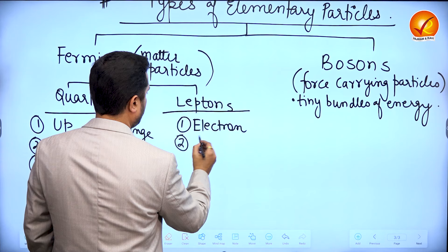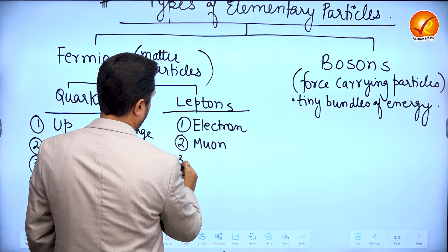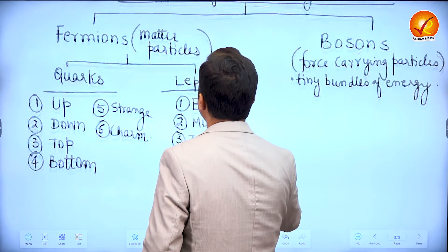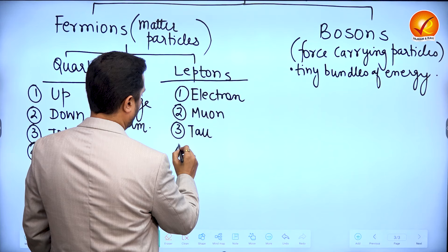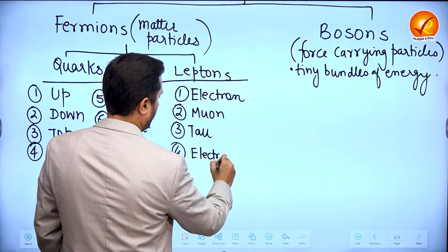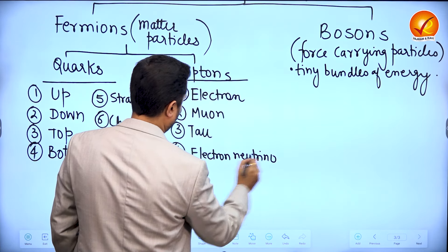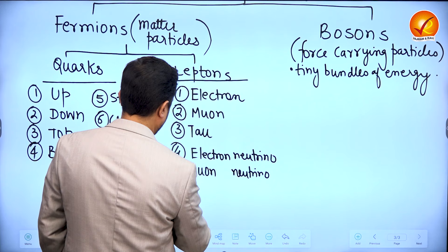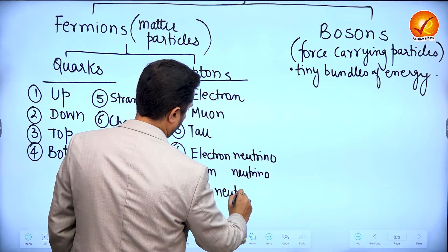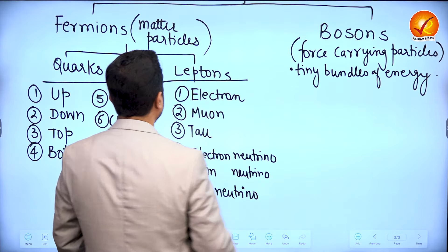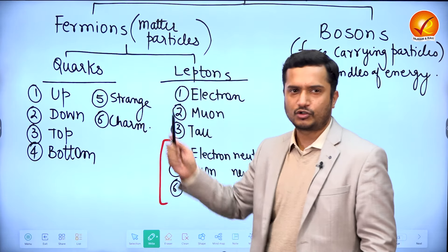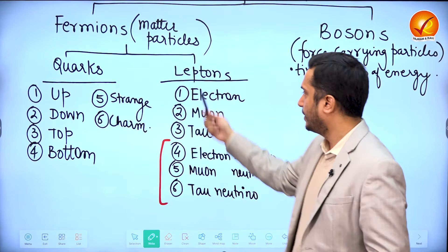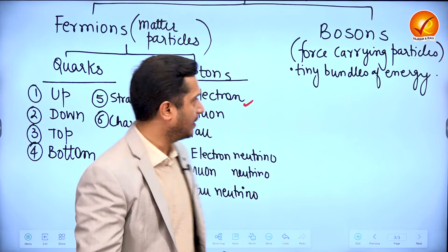The six leptons are: electron, muon, tau, and then we have the three neutrinos — electron neutrino, muon neutrino, and tau neutrino. These are the six types of leptons. So we have fermions, all the matter in the universe is made up of fermions. Fermions are of two types — quarks and leptons, each with six types. Electron belongs to the family of leptons.